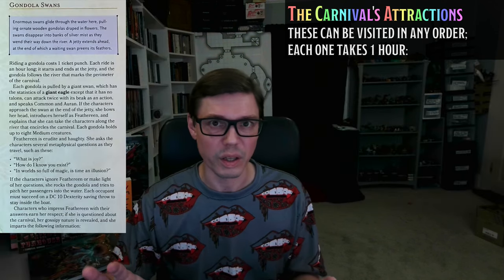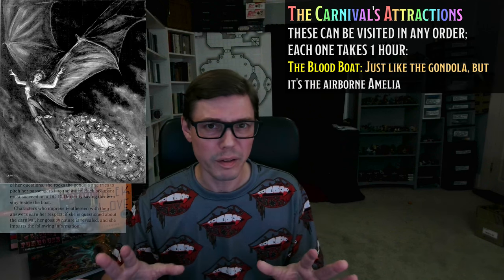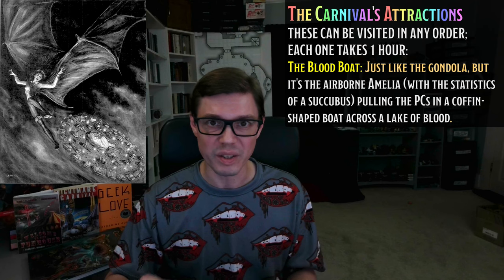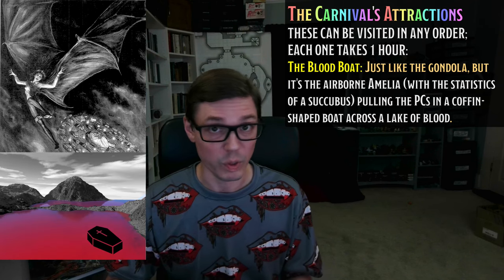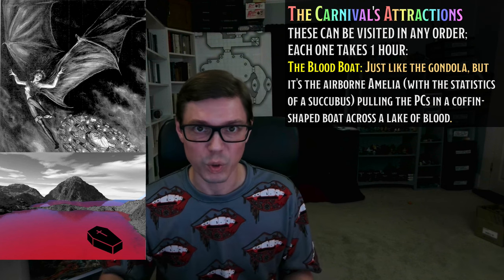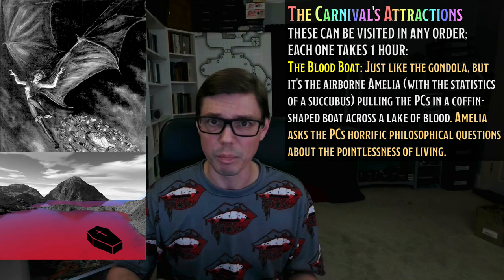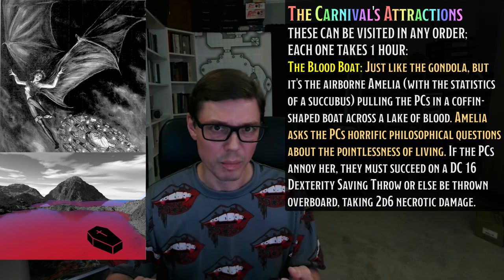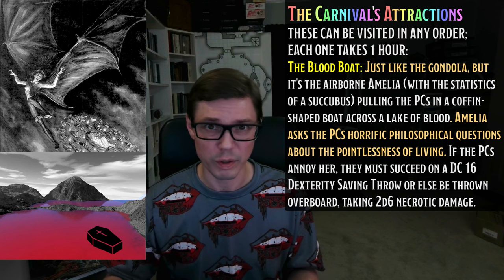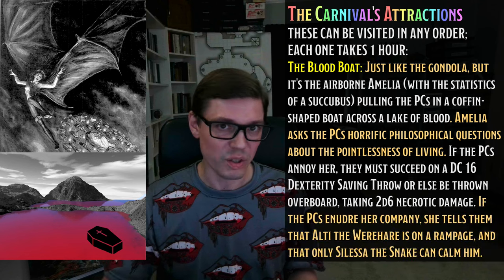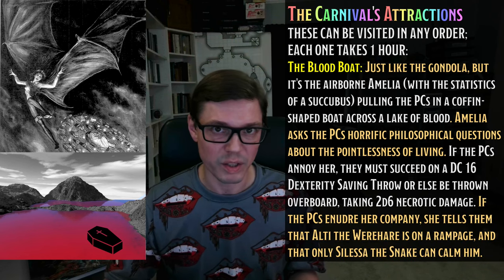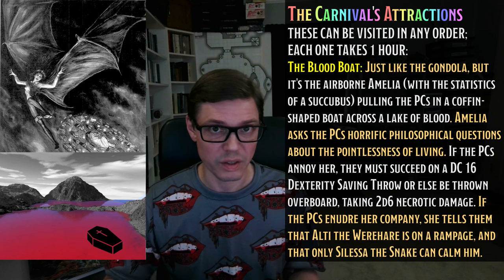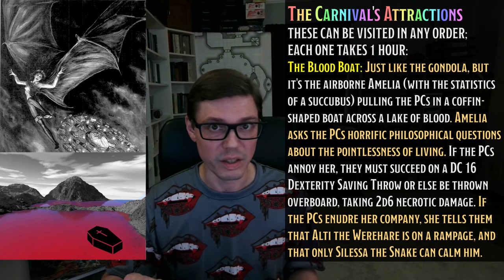The Geek gives them a gothic trinket of some kind, and the PCs move on the track closer to the gleefully fiendish side. The Geek reassures the PCs that you eventually get used to — and even come to enjoy — the taste. Next, instead of the gondola swans, we're going to have The Blood Boat. Amelia the Vampire — she's not actually a vampire, she's an ordinary woman with functional bat wings; we'll give her the statistics of a succubus — offers to pull the PCs in a coffin-shaped boat along the red waters of a lake which she says is filled with blood. It's a gothic boat ride, and as Amelia takes the PCs across the ichor, she talks with them about the pointlessness of life, the purposelessness of the universe, and asks them about how anything could matter. If the PCs annoy her, she overturns the boat, prompting every PC to either succeed on a DC 16 Dexterity save or else fall in the blood, suffering 2d6 necrotic damage. If the PCs don't annoy her, however, she mentions a little bit of carnival gossip: Alty the werehair has escaped and is stuck in his bestial form. As a result, he's furious and dangerous. She adds that the only person who can ever calm him down in this state is Silesa the snake.